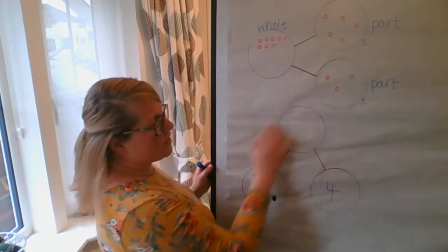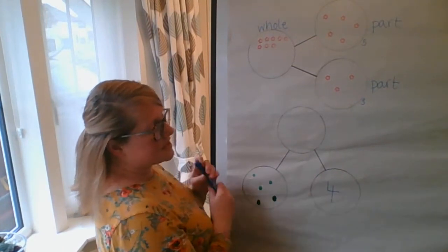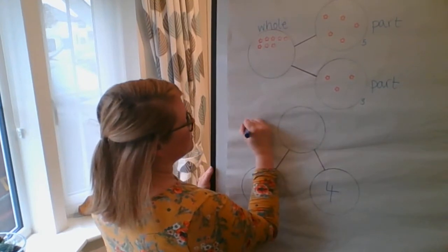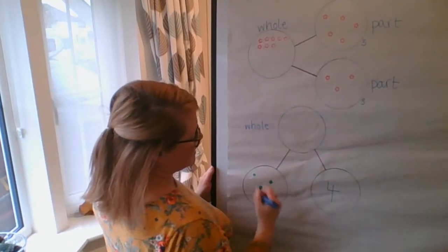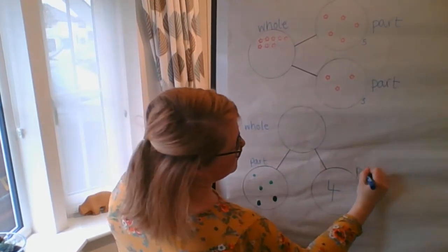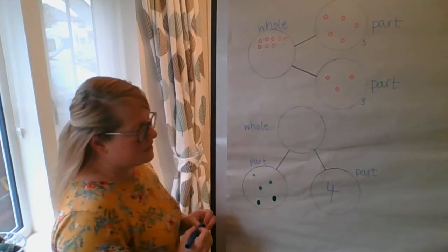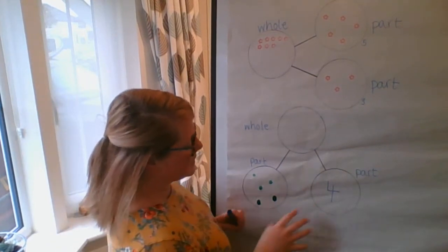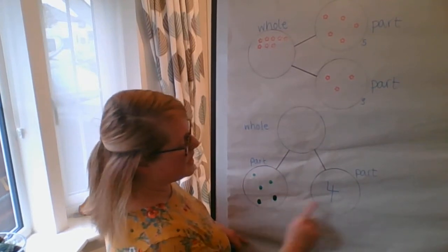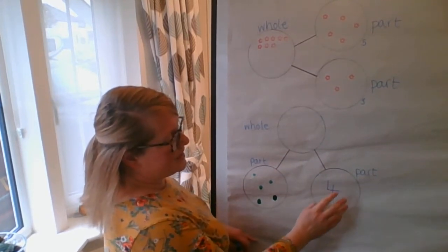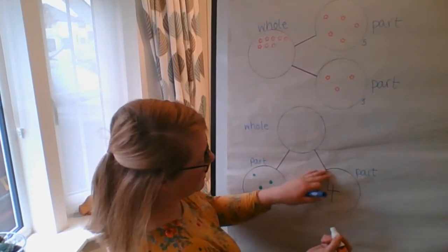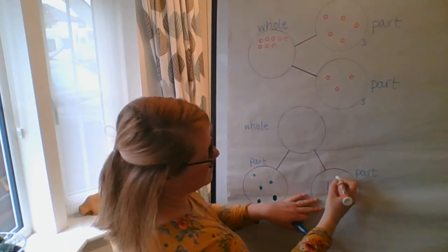Okay, so this, I've got another whole part model here represented slightly differently. It's just this turned around. So again, this is the whole, this is a part, and this is a part. Now we're working pictorially at the minute. That means with pictures. So in this part, I have a number of dots, but here I've written a numeral. Now I think it would be more helpful for me at the moment if I could make that value as a numeral, as a picture as well.